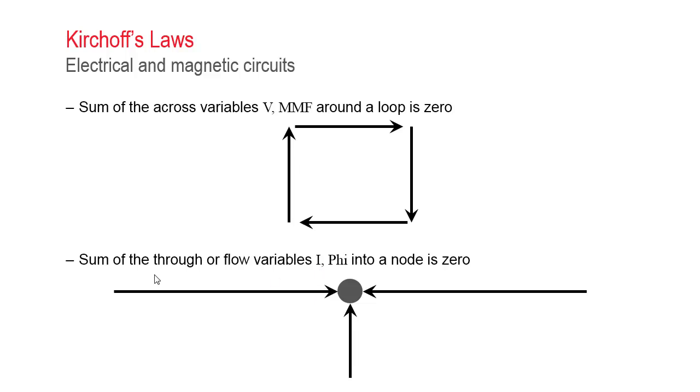Similarly, in an electrical circuit, the flow variable current sums to zero at any given node. And in the magnetic circuit, the phi sums to zero at any given node.